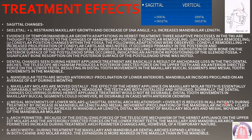The overjet is reduced in all patients during treatment by the increase in mandibular length. In Class 2 patients, the overjet is excessive, and it is reduced as the mandible increases in length.